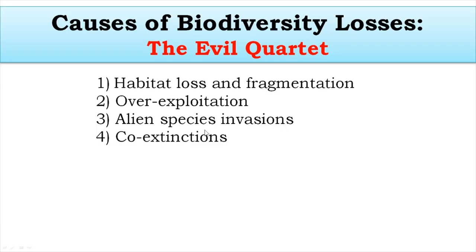Why are organisms undergoing extinction? Why are they faced with the threat of extinction? When we talk about the causes of biodiversity losses, we are talking about the causes behind species going extinct. There are four main reasons behind the loss of biodiversity, therefore called the evil quadrant. Those four causes are: first, habitat loss and fragmentation; second, over exploitation of organisms by human beings; third, alien species invasions or invasive species; and fourth, co-extinctions.